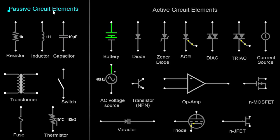A resistor is an electronic component that restricts the flow of electric current in a circuit. It is represented by a zigzag line in circuit diagrams. The value of a resistor is measured in ohms and determines the amount of resistance it provides to the current. An inductor is a passive component that stores energy in the form of a magnetic field when current flows through it. It resists changes in current flow and in circuit diagrams is represented by a coil or a series of loops.